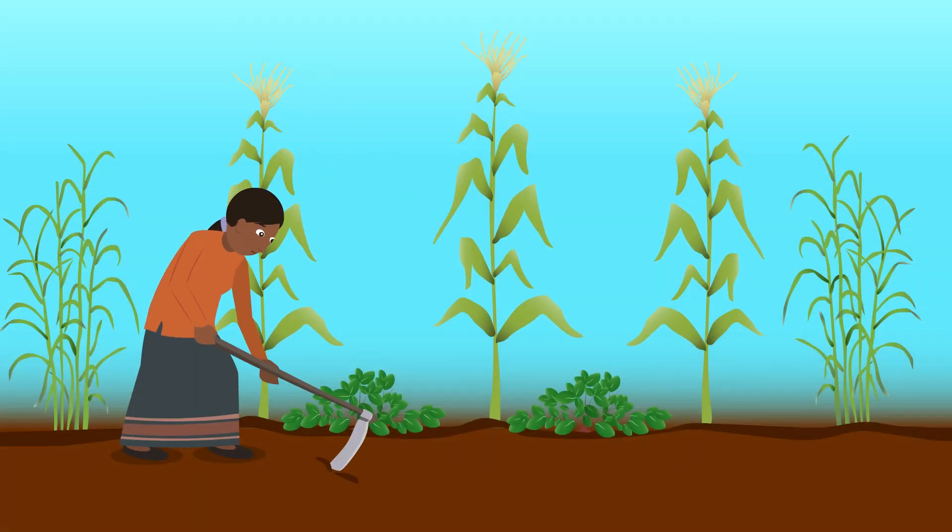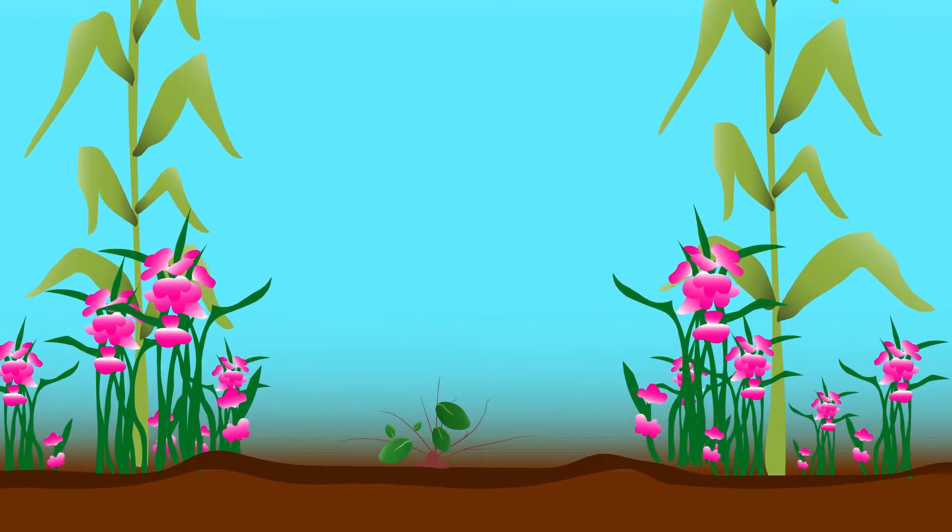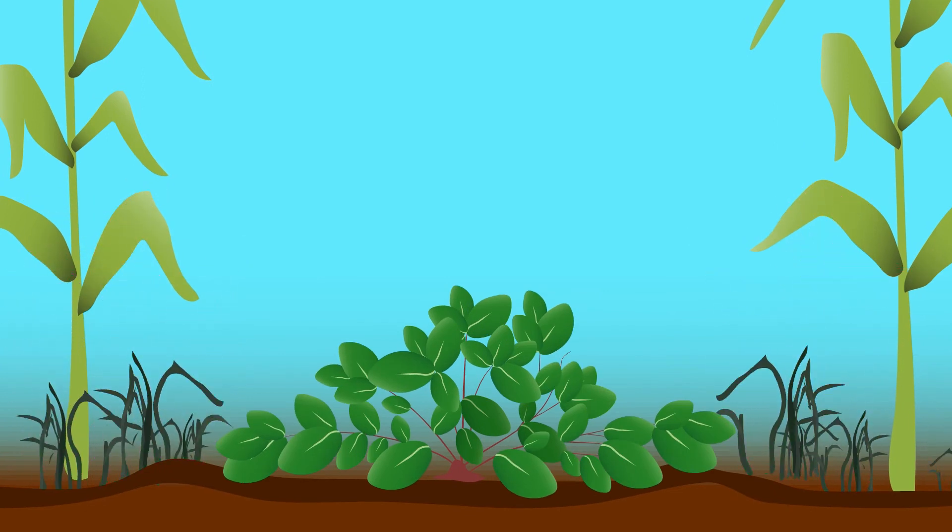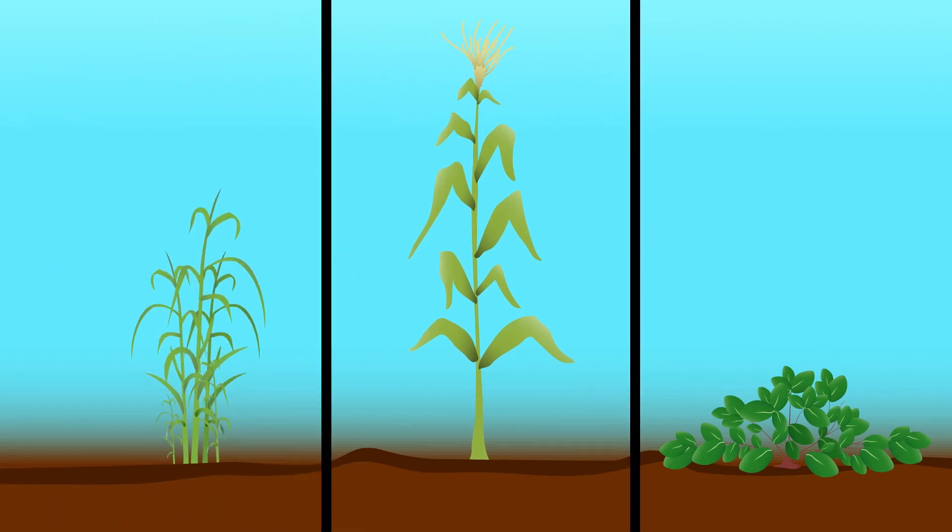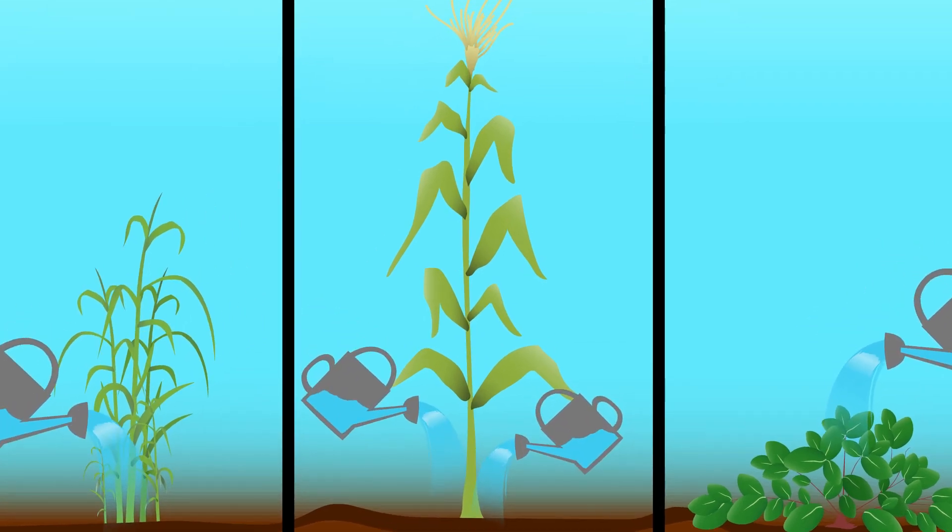The desmodium and elephant grass can also be harvested to feed your livestock or to sell. In addition, the desmodium helps control the strigoweed, also known as witchweed. Finally, climate-smart new varieties of desmodium and elephant grass are available that require less water and therefore save more water for the maize.